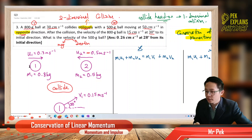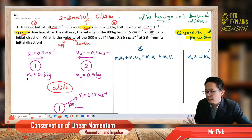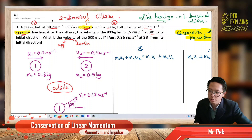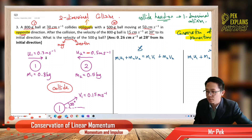Now let us continue. I have illustrated the situation here — ball one, ball two, all the masses given. I changed the masses to kilograms from grams, dividing by a thousand. And the velocity also from cm per second, I changed to meters per second.